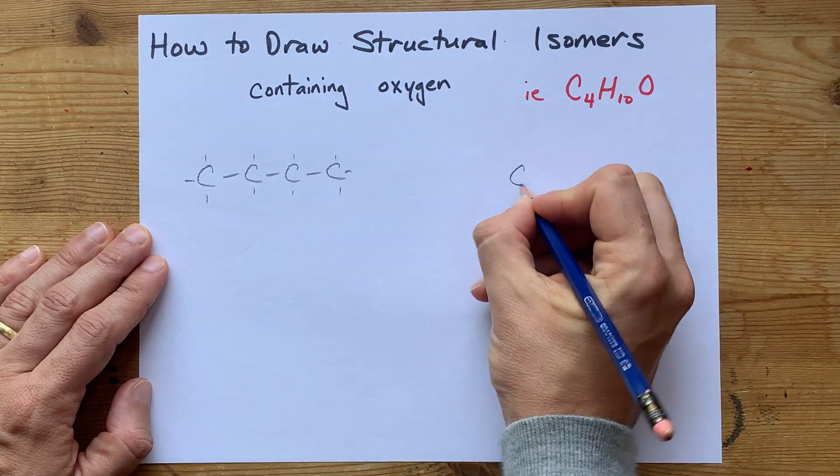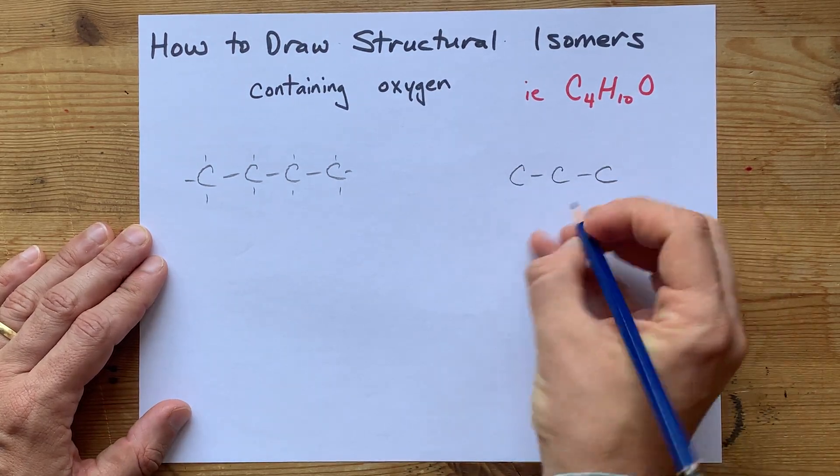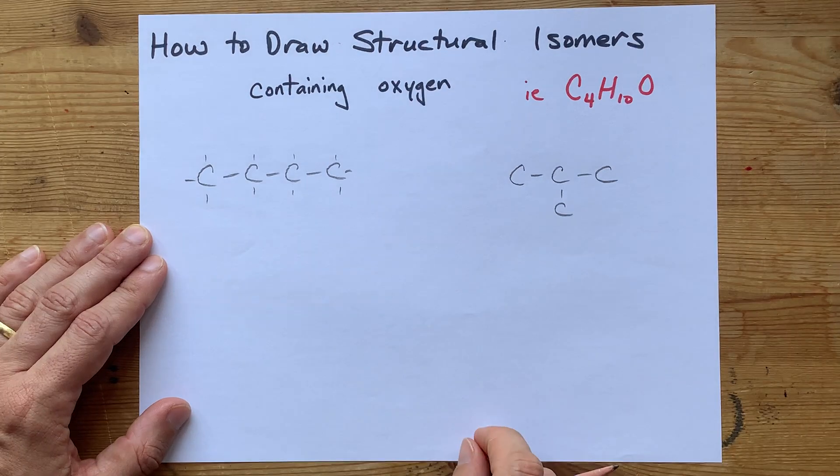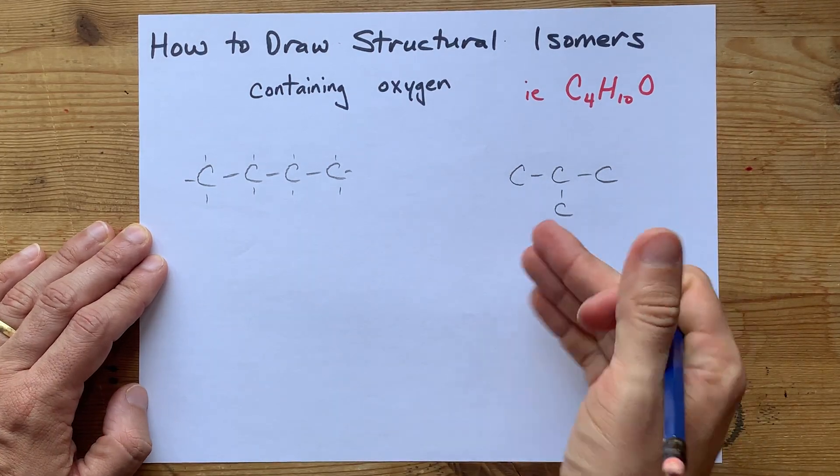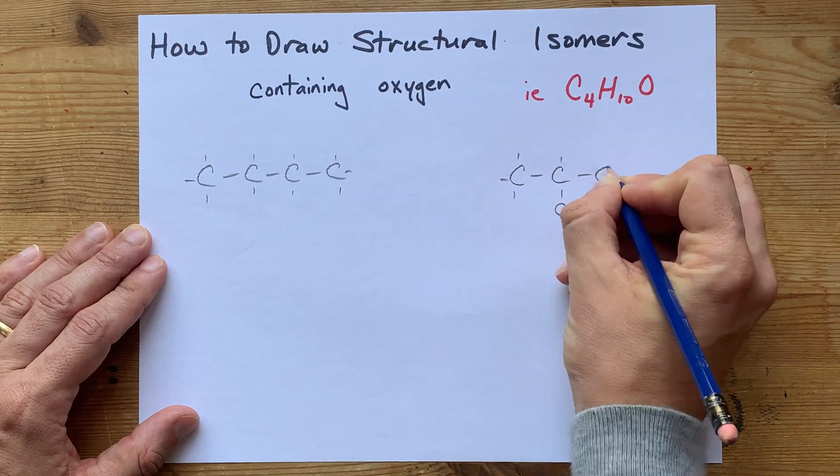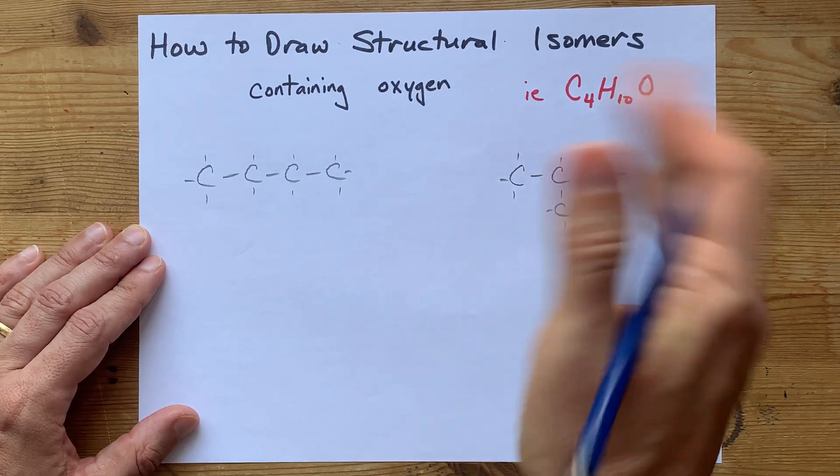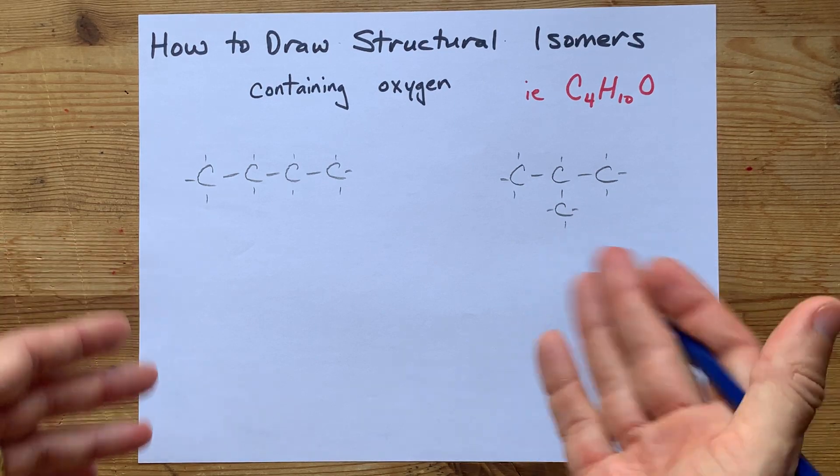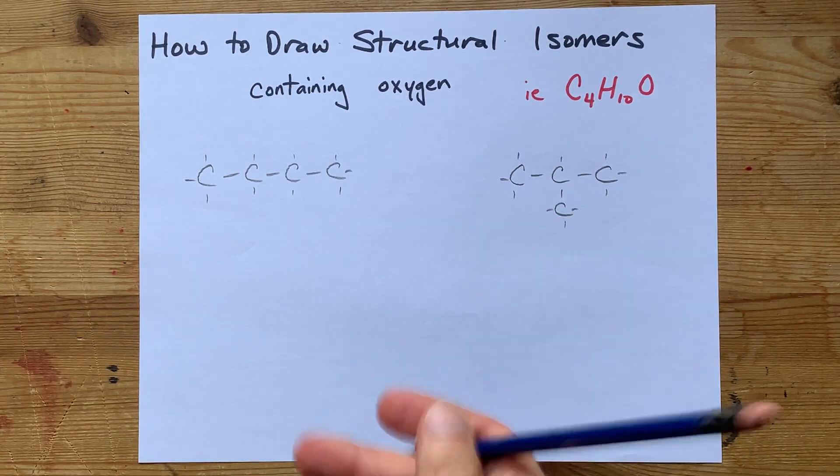The only other option is to have a carbon chain of three with a methyl group sticking out of one. See how it's still four carbons all single bonded together? Counting 1, 2, 3, 4 carbons and 5, 6, 7, 8, 9, 10 hydrogens.